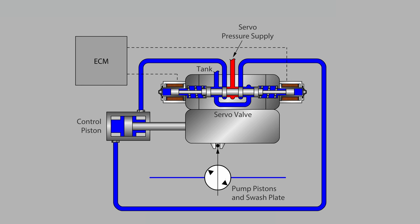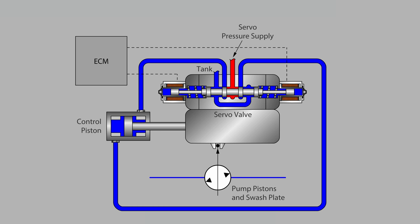A closed-loop hydraulic system is sometimes referred to as a hydrostatic system and is popular for operating hydraulic motors that propel a mobile machine, such as a skid-steer loader, both forwards and backwards.